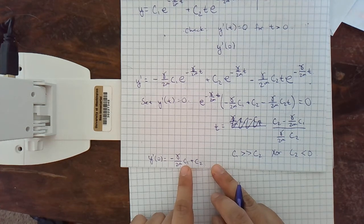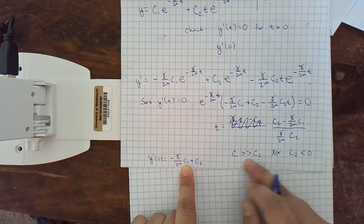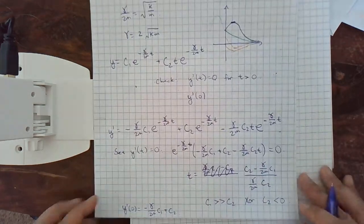So, this is negative when c1 is a lot bigger than c2. Actually, this is exactly this numerator here. So, actually, here's what happens.